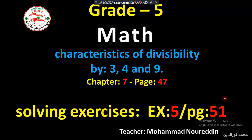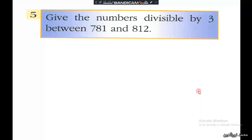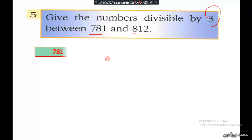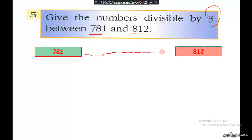Exercise 5 on page 51: write the numbers that are divisible by 3 between 781 and 812. We have 781 and 812, and there are many numbers in between, and we have to find those that are divisible by 3.